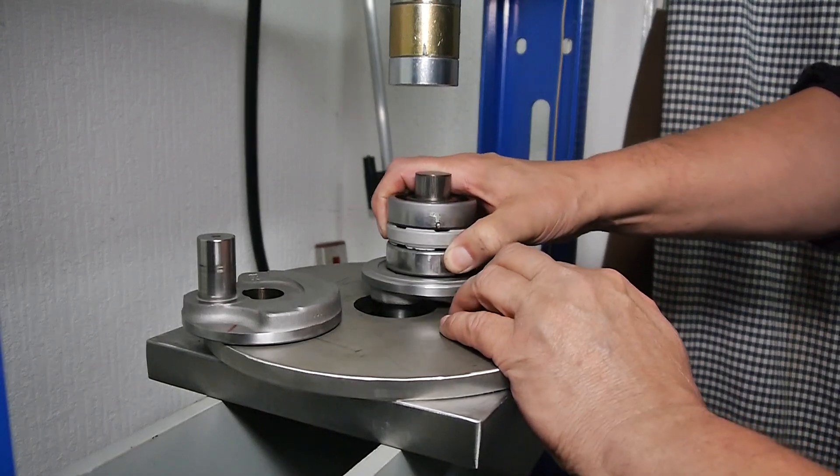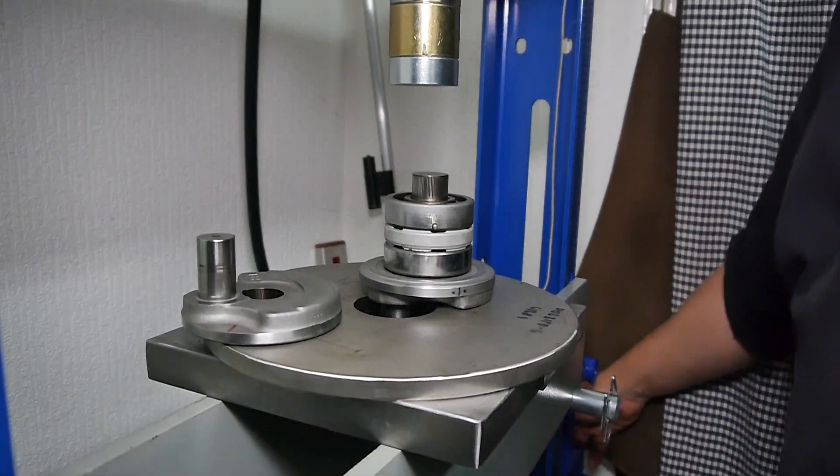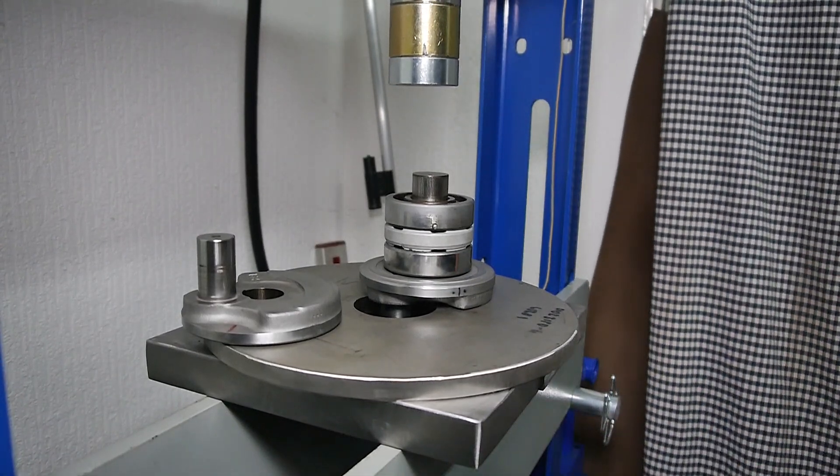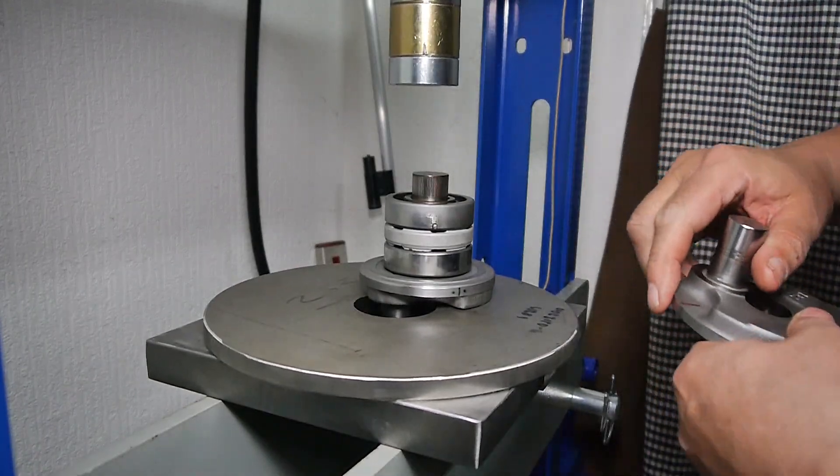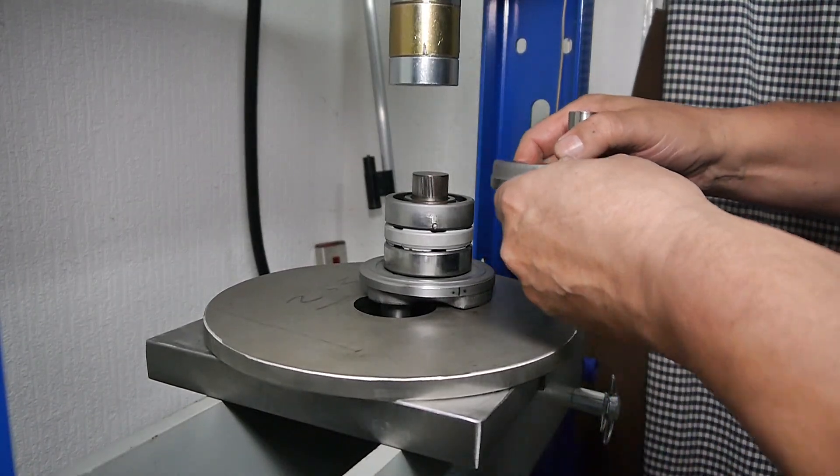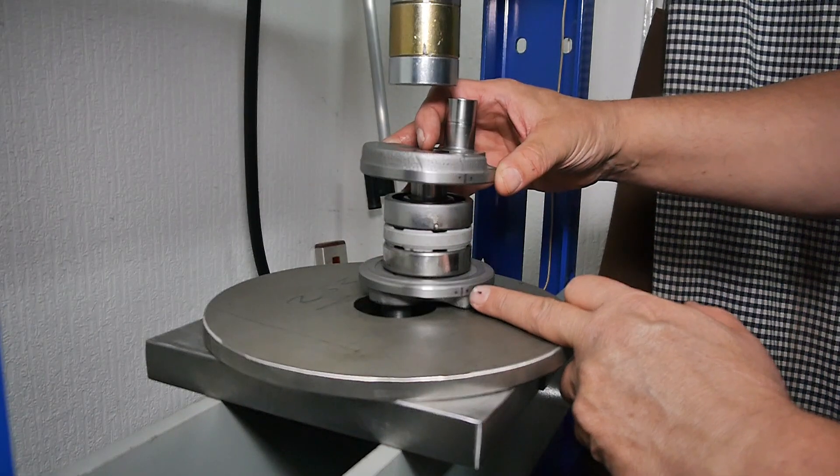So it sits in nicely there. Next stage is to press in the other half, 180 degrees off from the other one. And as you can see on here, you can see my marks I've highlighted them a bit better.